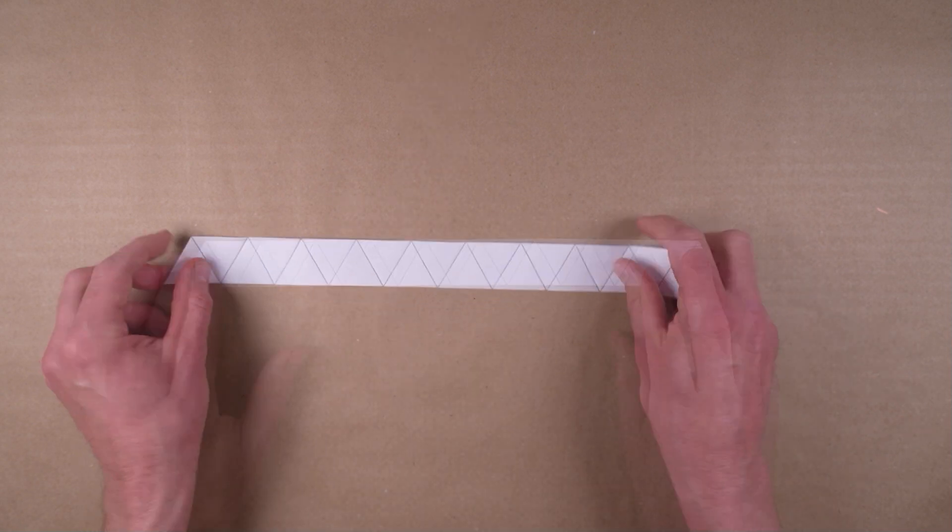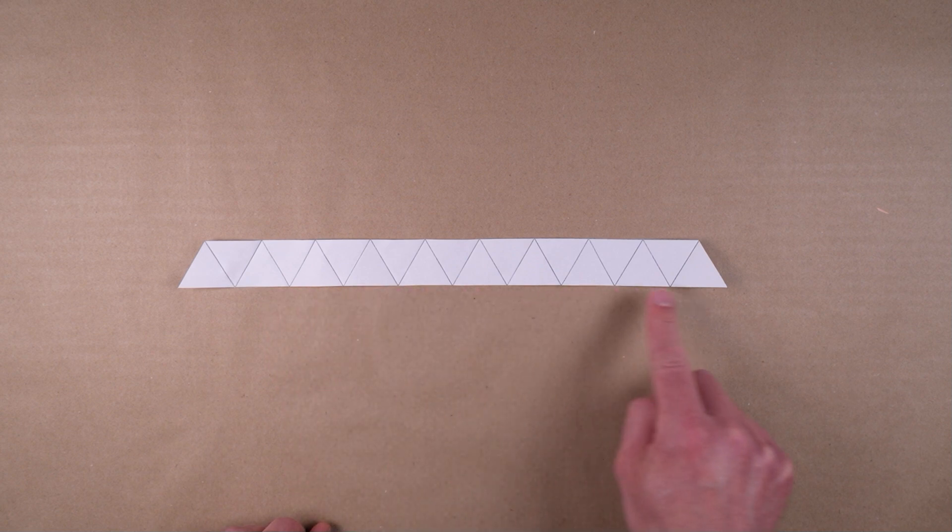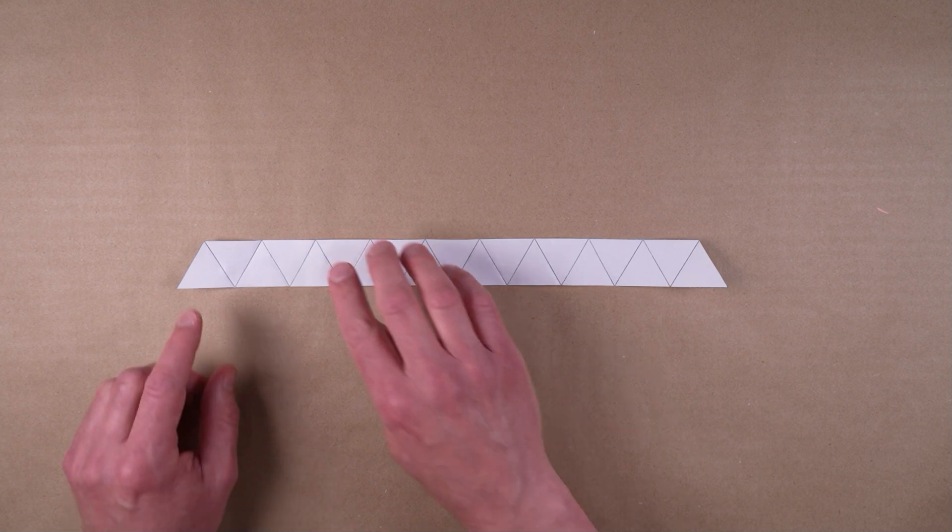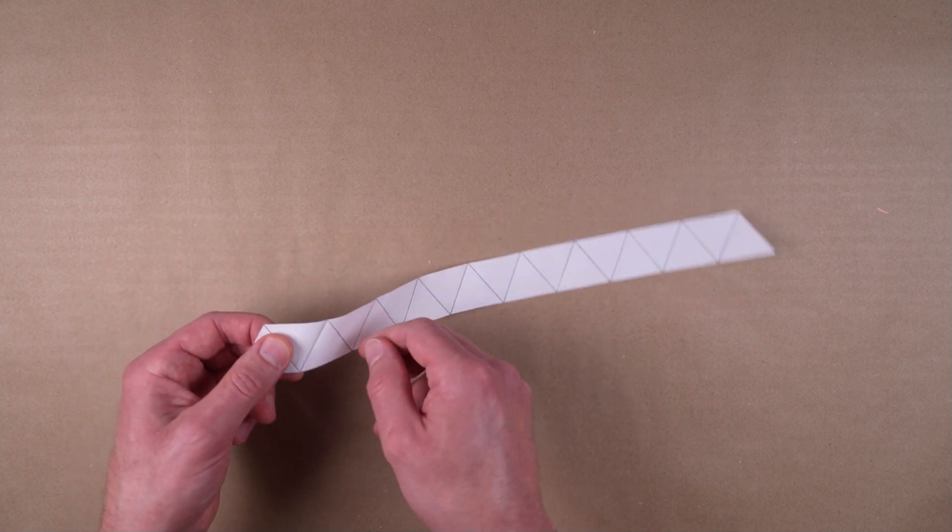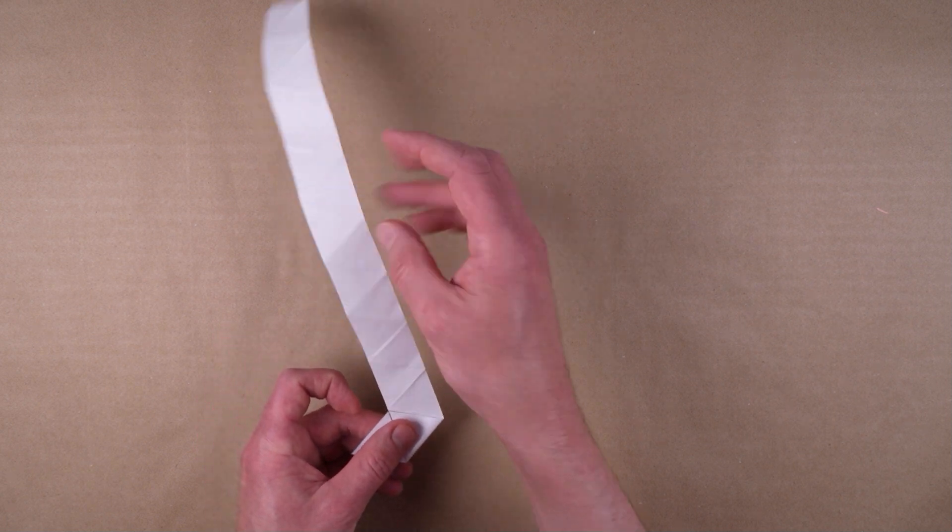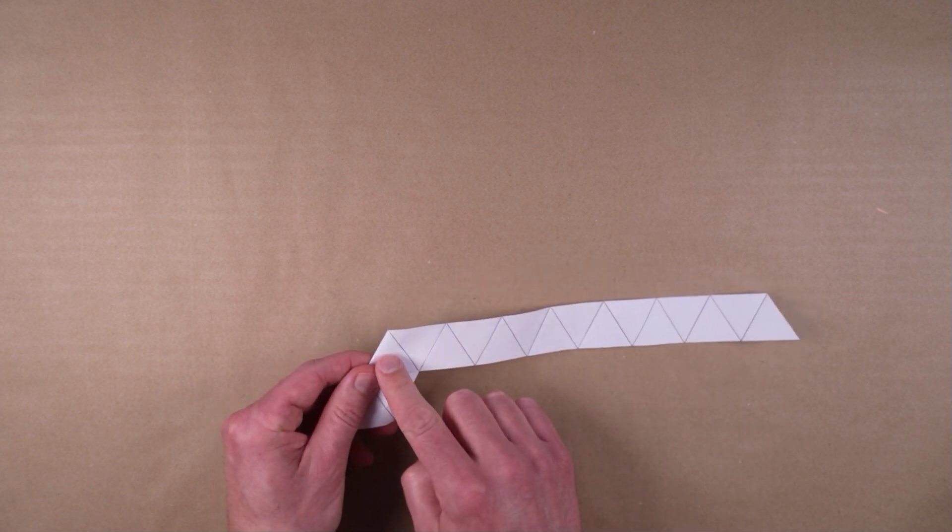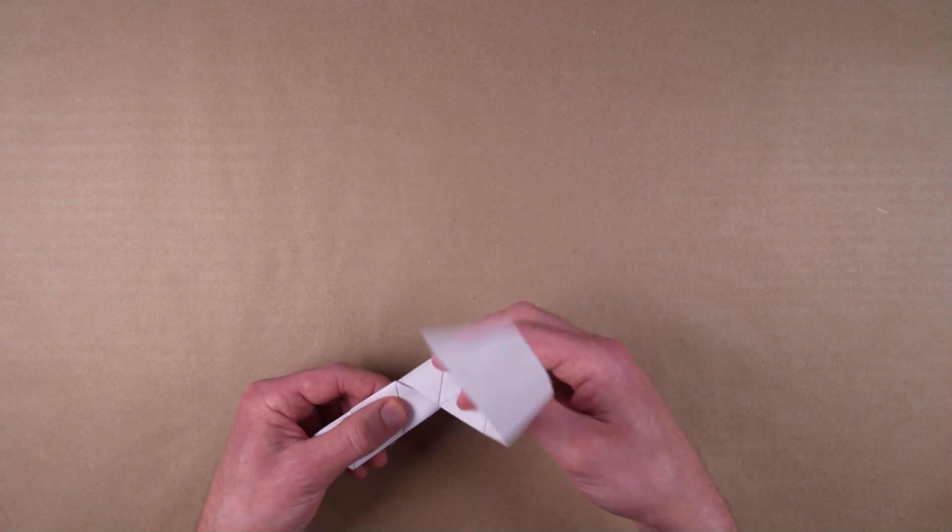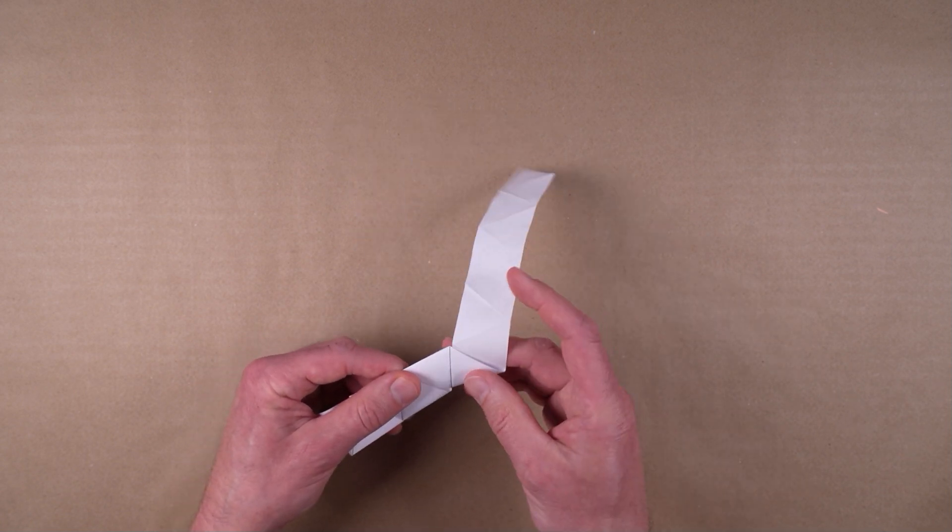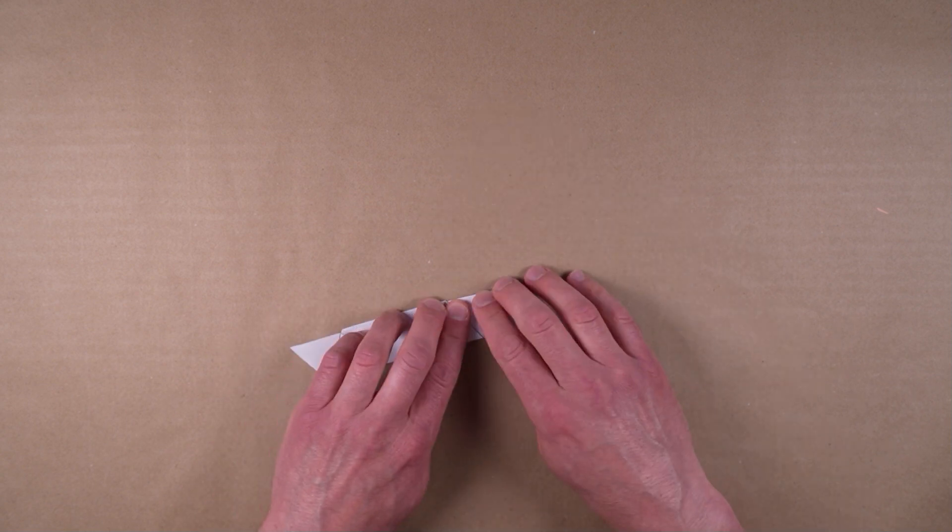Set the strip in front of you like this, with the longest side closest to you. From here, repeatedly fold back the right side of the strip after every second triangle. It should feel like you're folding in a spiral manner to create a sort of tunnel between two layers of paper.